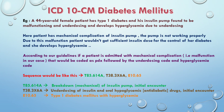Let's discuss an example. A 44-year-old female patient has type 1 diabetes and her insulin pump was found to be malfunctioning and under-dosing, and she develops hyperglycemia due to under-dosing. Since the pump is not working properly due to this malfunction, the patient would not get a sufficient insulin dose for control of her diabetes.